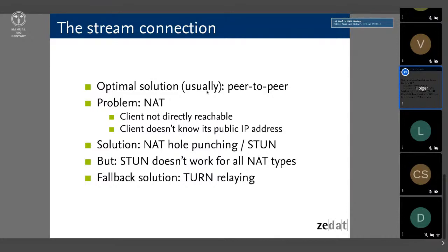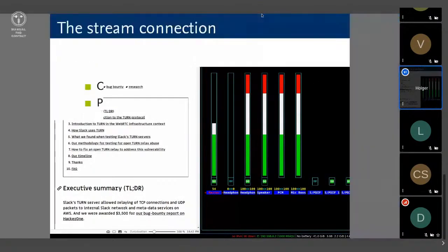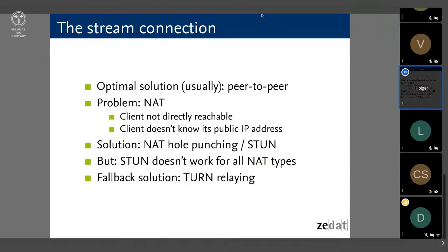STUN is not the solution for all NAT types. In cases where it doesn't work — which in our experience is typically the case on mobile networks — the fallback solution is to use TURN to relay the stream over the server. In that situation, the clients figure out there's no way to build a peer-to-peer connection and fall back to relaying everything over the server. There's an RFC called ICE which describes the mechanism for both sides to negotiate which type of connection — peer-to-peer or TURN relaying — is to be used.